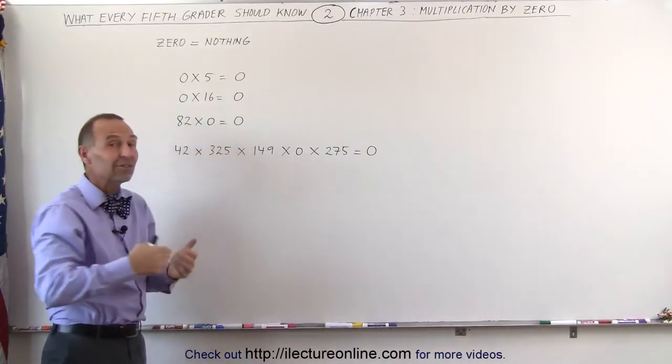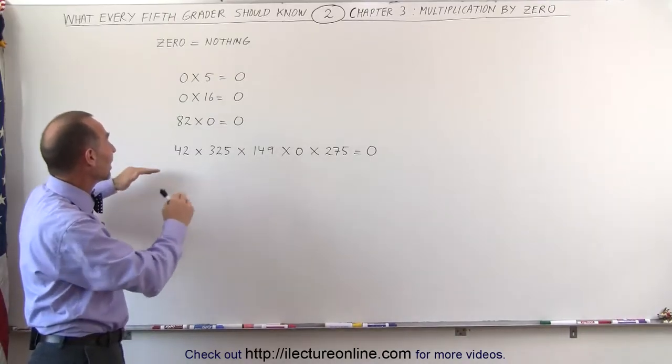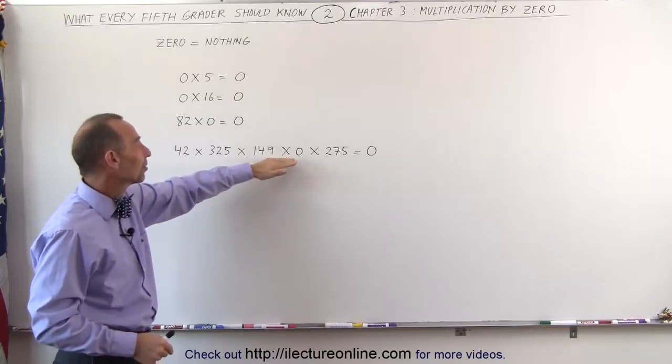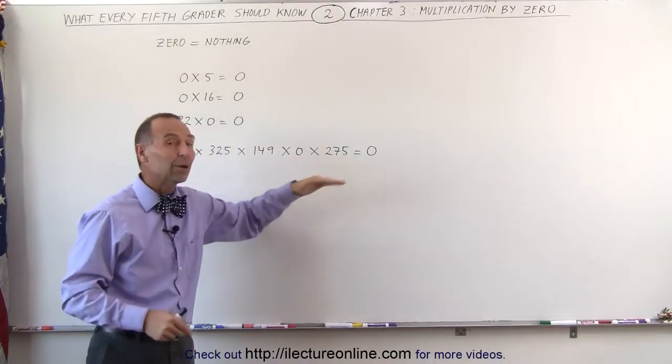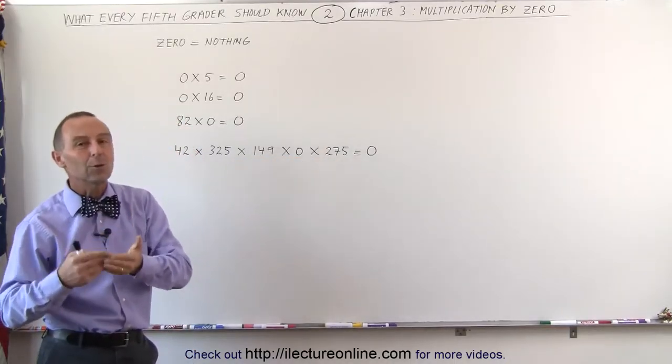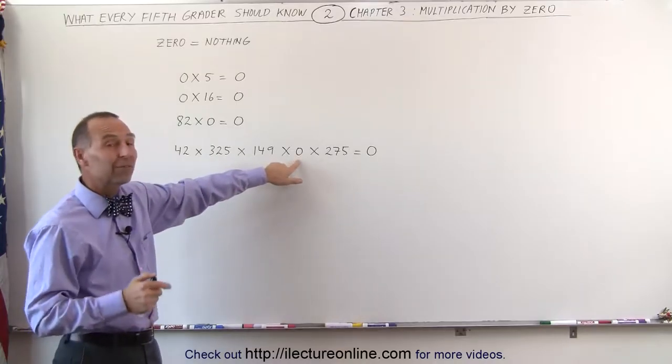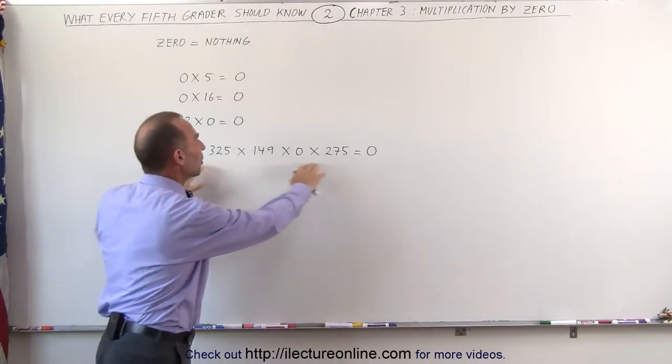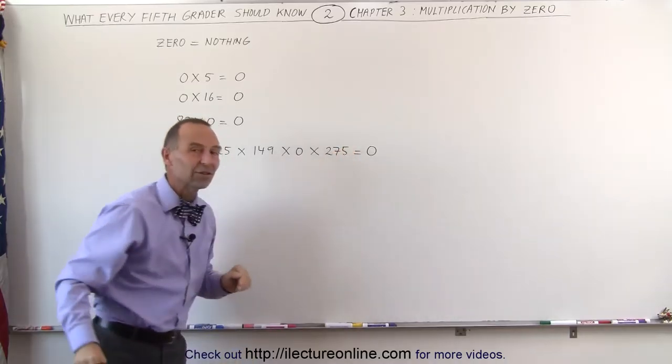I remember my teacher tried to trick us. He would give us something like this: 42 times 325 times 149 times zero times 275. And what does it equal? It always equals zero because whenever zero appears anywhere in the multiplication, it doesn't matter how many other numbers there are, the answer is always zero.